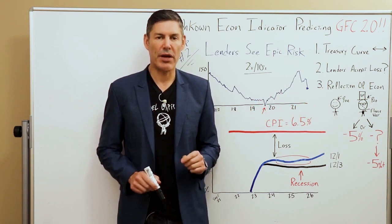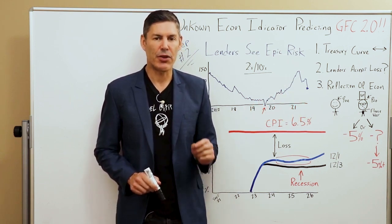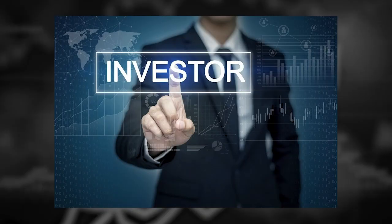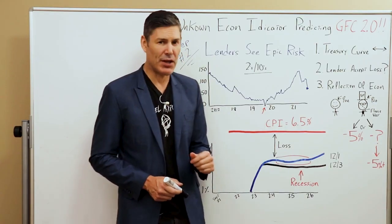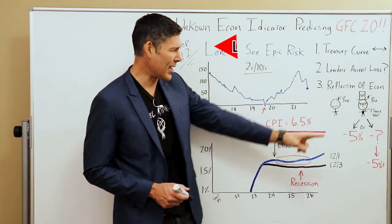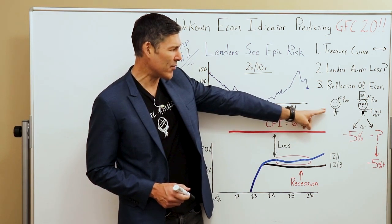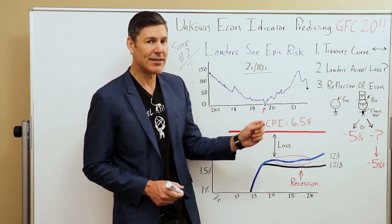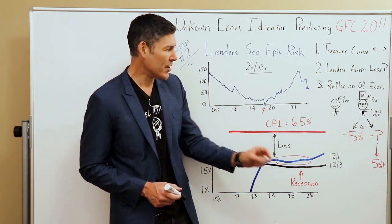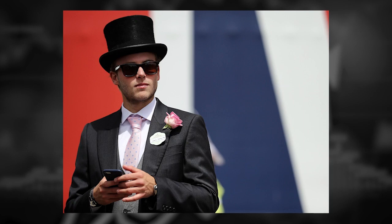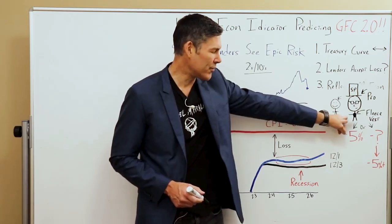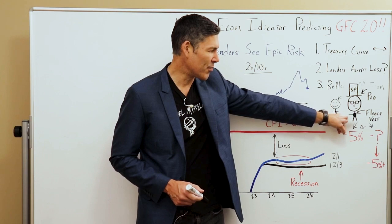Now that we understand what these markets are predicting, let's look at it through the lens of an investor when they have to consider consumer price inflation. We've got two investors on the whiteboard — the average Joe and his cousin the seasoned pro. The seasoned pro has his glasses, his top hat indicating he's very rich, and of course, like all hedge fund managers, he's wearing an official fleece vest.